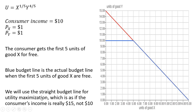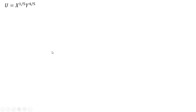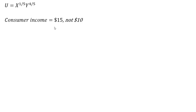In terms of the utility maximization, the way we want to proceed is we're going to use the straight-line budget line. It touches the Y-axis at 15 and extends all the way to 15 on the X-axis — that's what we're going to use when we are maximizing utility. So we're going to assume that the consumer has that straight-line budget line that touches both axes at 15, implying that income is $15, keeping the prices unchanged.